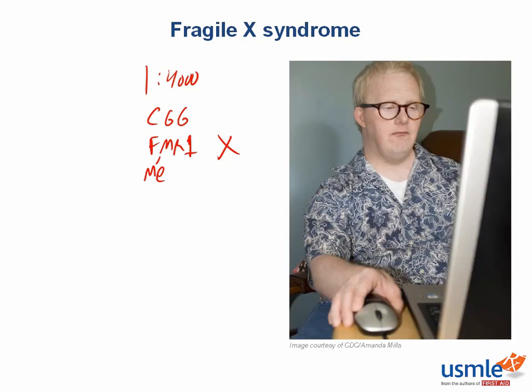You can first recognize this in a patient with a long face, a large jaw, and everted ears, which you can see in this patient. These patients will also have autism and macroorchidism and are predisposed to have mitral valve prolapse.